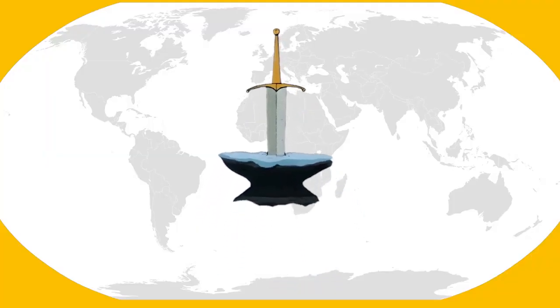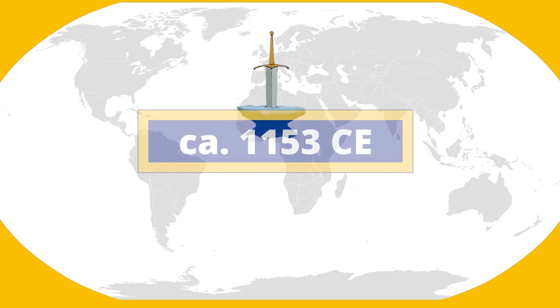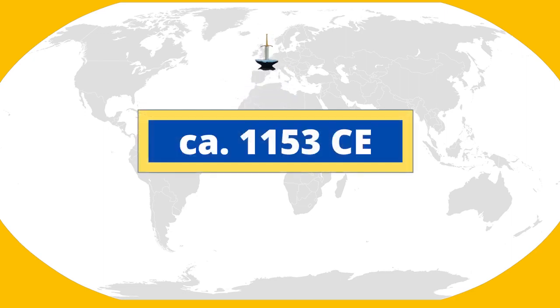Conclusion. Based on the movie's aesthetic, exposition, and dialogue, I am placing the Sword in the Stone near London, England, circa 1153 CE. So, what do you think of my conclusions? Do you think I got the date for Sword in the Stone correct, or do you think there's another date that works better? Let me know in the comments, and also tell me which Disney movie you would like me to analyze next. Don't forget to like and subscribe, and as always, thank you for watching. I'll see you next time.